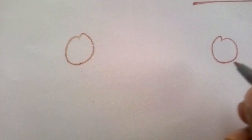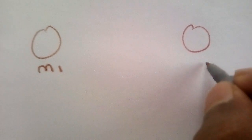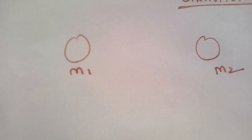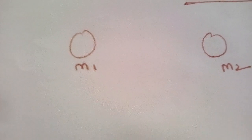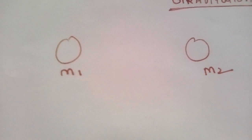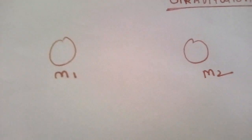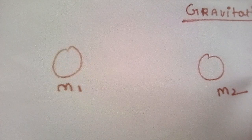Here we are going to understand about gravitation. In gravitation, every particle of matter attracts every other particle of matter. This is clear for us — every particle of matter attracts any other particle of matter in this world. Newton also published Newton's Law of Gravitation. According to Newton, every particle of matter is attracted by every other particle of matter.